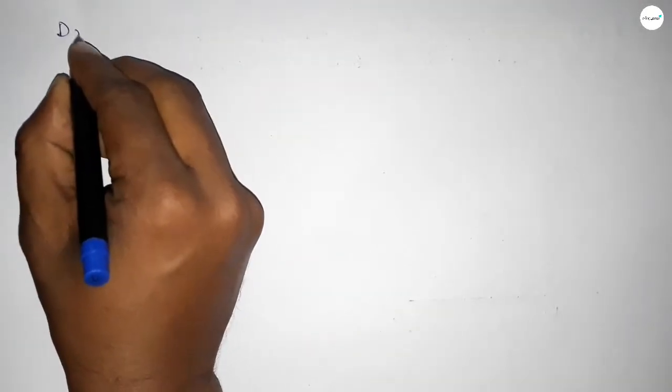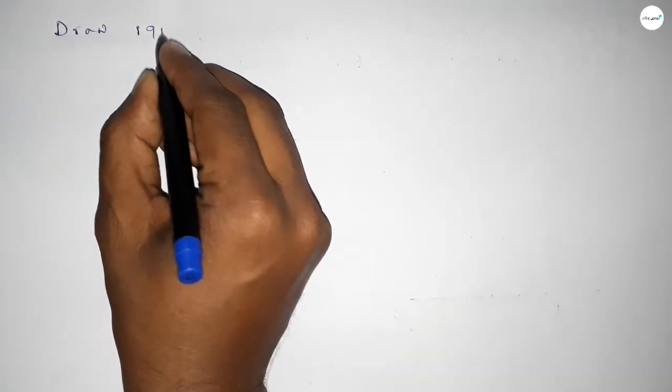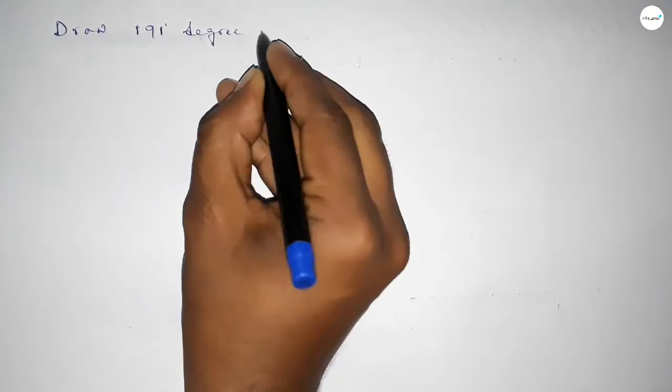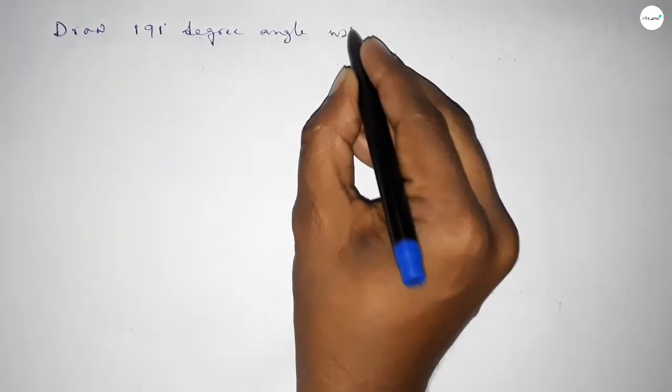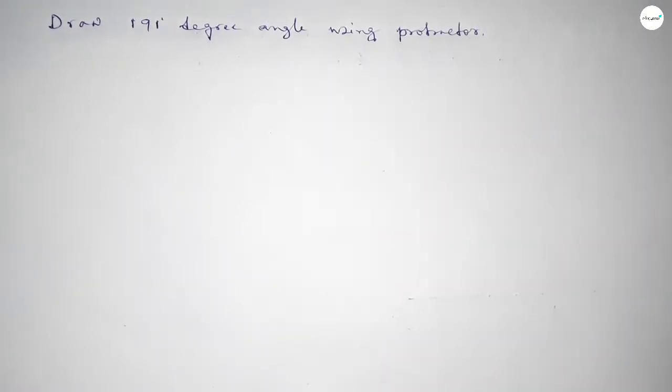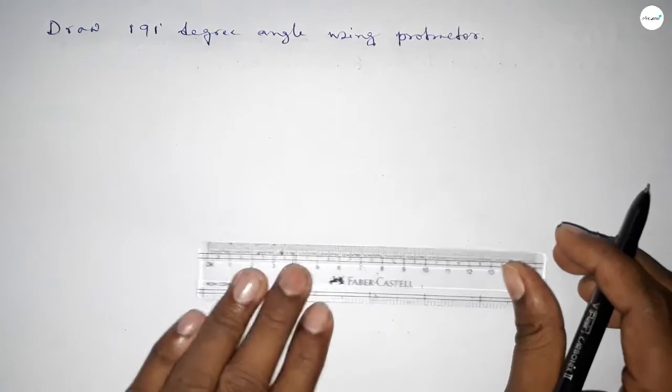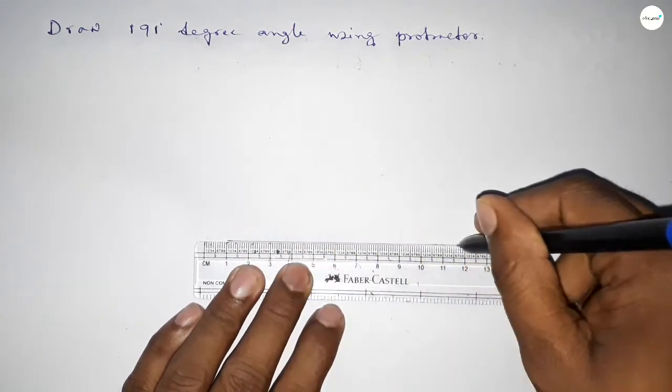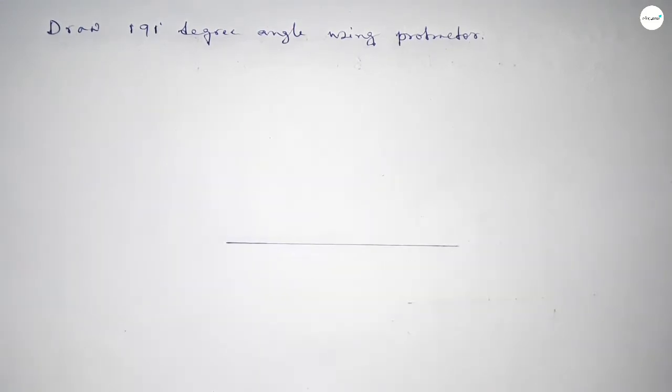Hi everyone, welcome to SSR Classes. Today in this video we have to draw a 191 degree angle by using a protractor. So let's start the video. First of all, we have to draw here a straight line of any length.